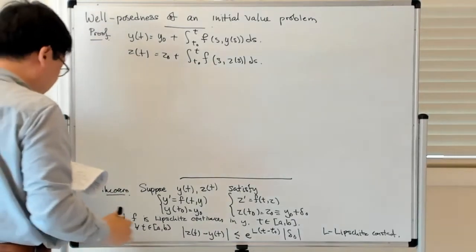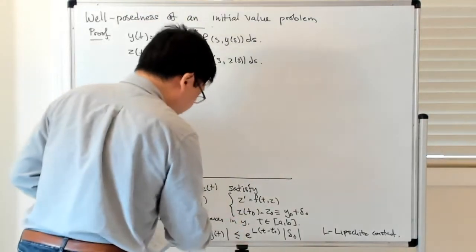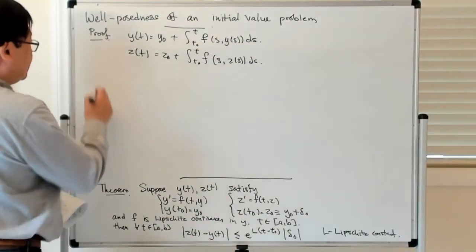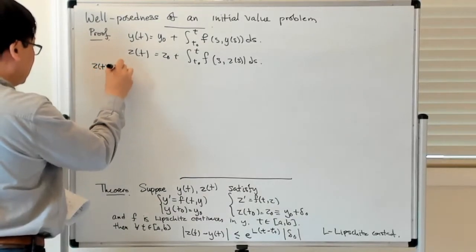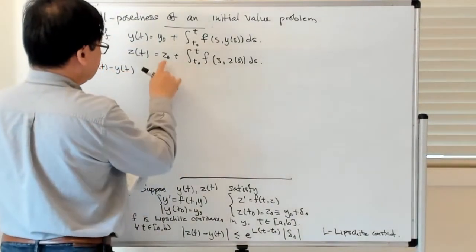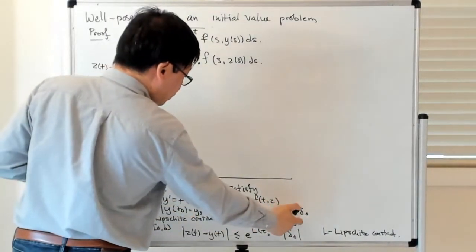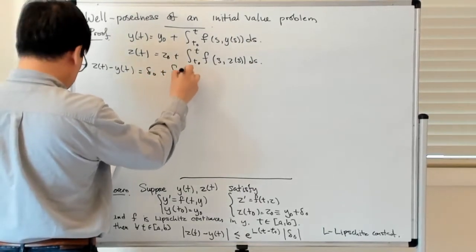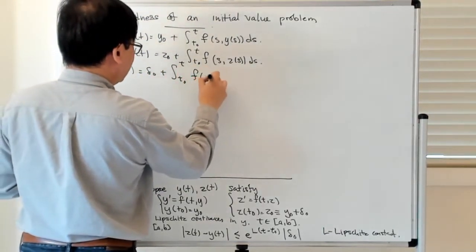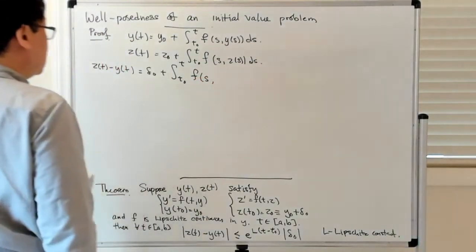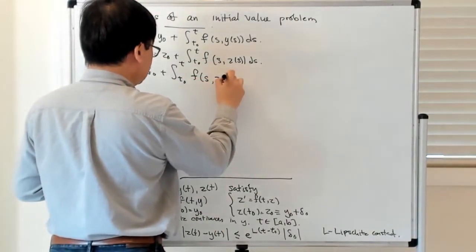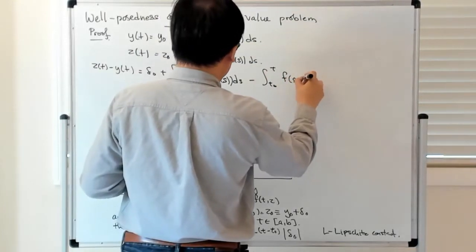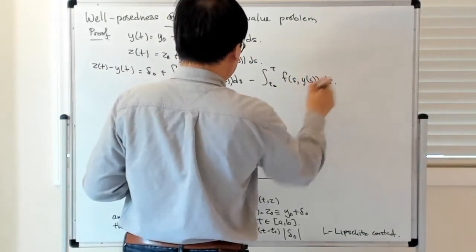We can take the difference of these two expressions to get the growth rate of the difference, since we're trying to establish an estimate on z(t) − y(t). So z(t) − y(t) equals (z₀ − y₀) plus ∫[t₀ to t] f(s, z(s)) ds minus ∫[t₀ to t] f(s, y(s)) ds. Since z₀ − y₀ = δ₀ by definition, this becomes δ₀ plus the difference of those two integrals.